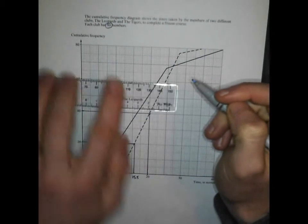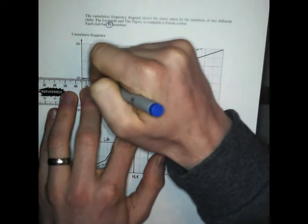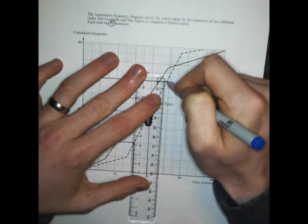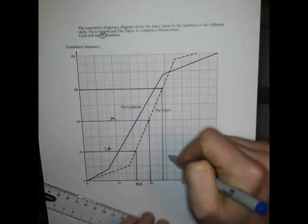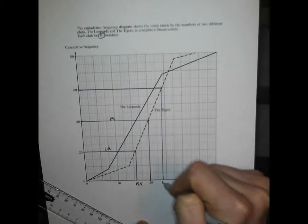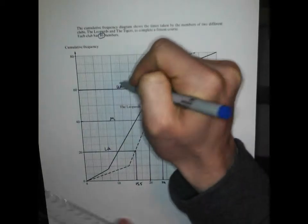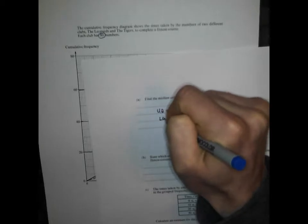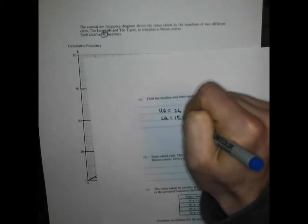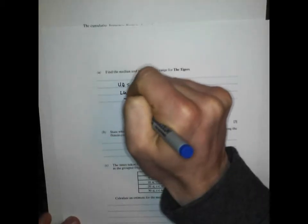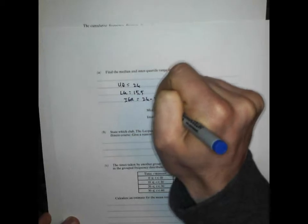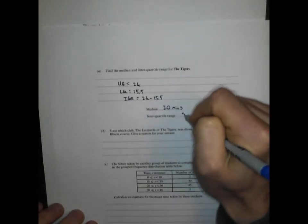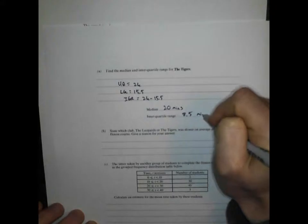What about my upper quartile? I'm going to go across at 60. See where it hits at 60 and go down. This looks a little bit easier to read. That seems to be two marks away from 25, so I think that's going to be 24. My upper quartile is 24, lower quartile is 15.5. My interquartile range is 24 take away 15.5, which is 8.5 minutes.